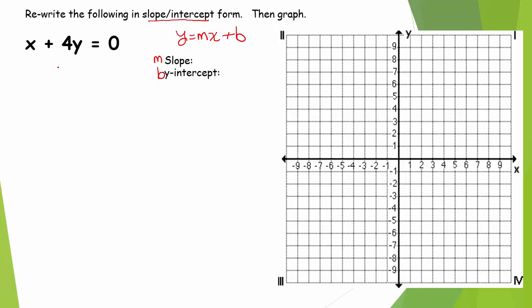The first thing we're going to do is rewrite this in slope-intercept form, which means we need to isolate y by itself. Our first step here will be to subtract x from both sides. x minus x zeros out, so on this side we're left with 4y equals negative x.